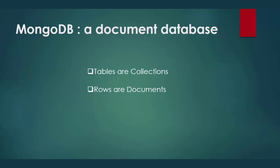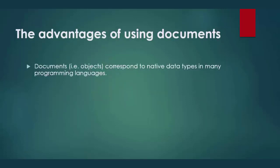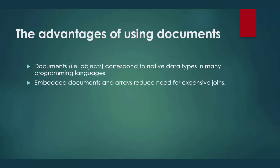We can relate MongoDB with relational databases. In relational databases we use tables; in MongoDB we use collections. In relational databases we use rows to store data; in MongoDB we store data in documents. Documents correspond to native data types in many programming languages. MongoDB uses JSON documents, which are objects, making them very easy to use in programming languages such as Java and PHP. Embedded documents and arrays reduce the need for expensive joins, making it very easy to get required results without the complex joins required in RDBMS.